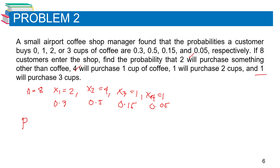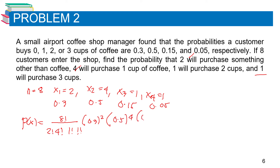Using the formula: P(x) equals 8 factorial over 2 factorial times 4 factorial times 1 factorial times 1 factorial, multiplied by 0.3 squared, times 0.5 raised to 4, times 0.15 raised to 1, times 0.05 raised to 1. Calculating this using a calculator gives a result of 0.0354.